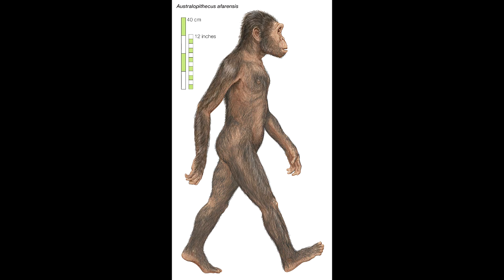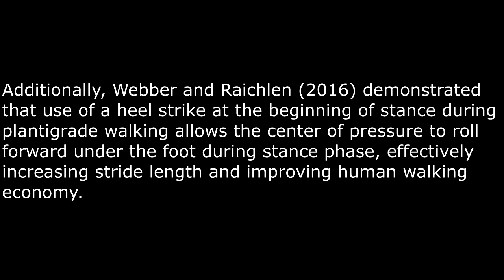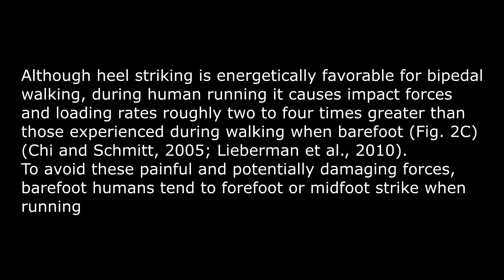Scientists know from footprints found preserved in the volcanic ash in Laetoli, Tanzania, that ancient hominins practiced heel toe walking as early as 3.6 million years ago. By landing on the heel of the leading foot and pushing off from the front of the trailing foot, humans dramatically decrease the cost of walking. It has also been demonstrated that using a heel strike at the beginning of stance allows the center of pressure to roll forward under the foot during stance phase, effectively increasing stride length and improving human walking economy. Although heel striking is energetically favorable for walking, the impact forces are substantially higher during running. To avoid these painful and damaging forces, barefoot humans tend to forefoot or midfoot strike when running. This causes some confusion as people extrapolate the mechanics of running technique to walking technique, although they are very different.